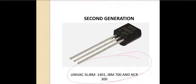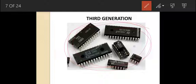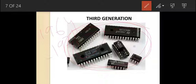Now, third generation computers. The technology used was ICs — IC stands for integrated circuit. They could contain thousands of transistors. Its timeline was from 1964 to 1971. Their features were they were faster and more efficient than second generation computers.